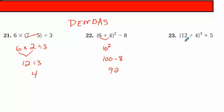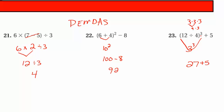Next one. Any parentheses? Yes — 12 divided by four is three. Then I bring my exponent: three to the third power. That's three times three times three — nine times three is 27. So all of that is 27. Then bring down plus five, so that is 32.